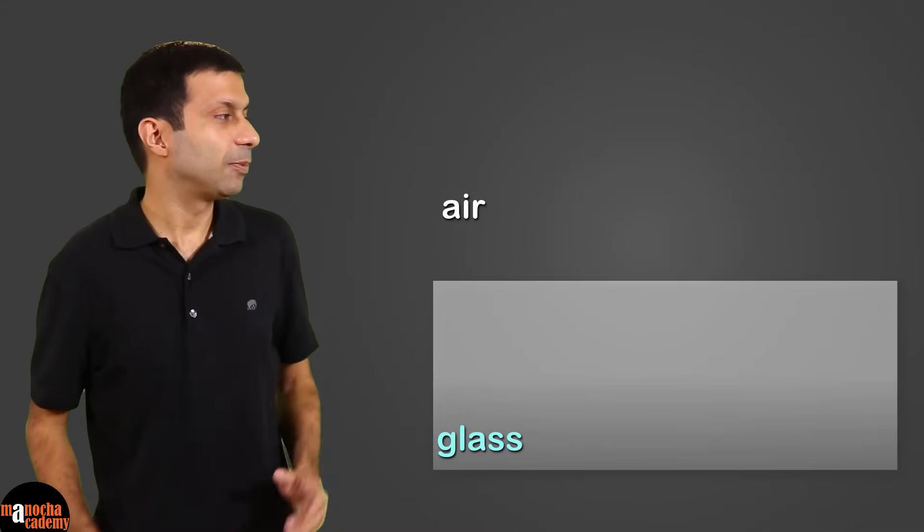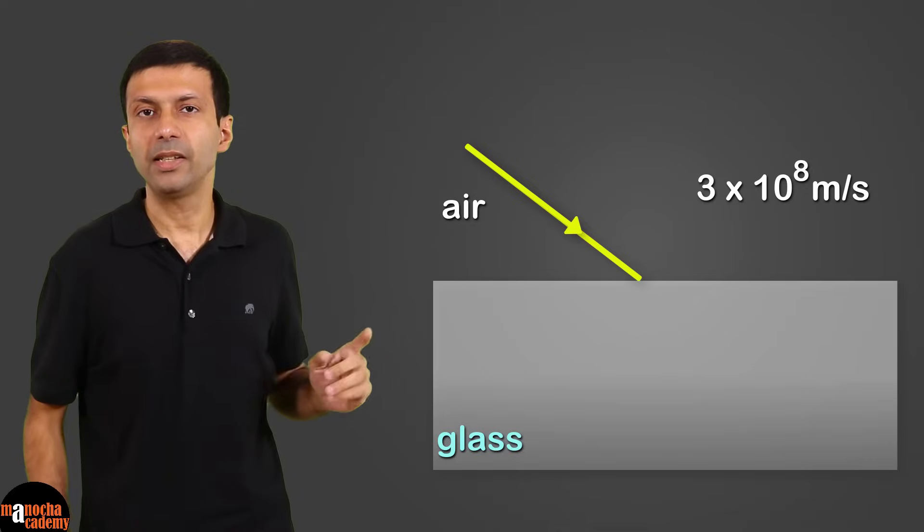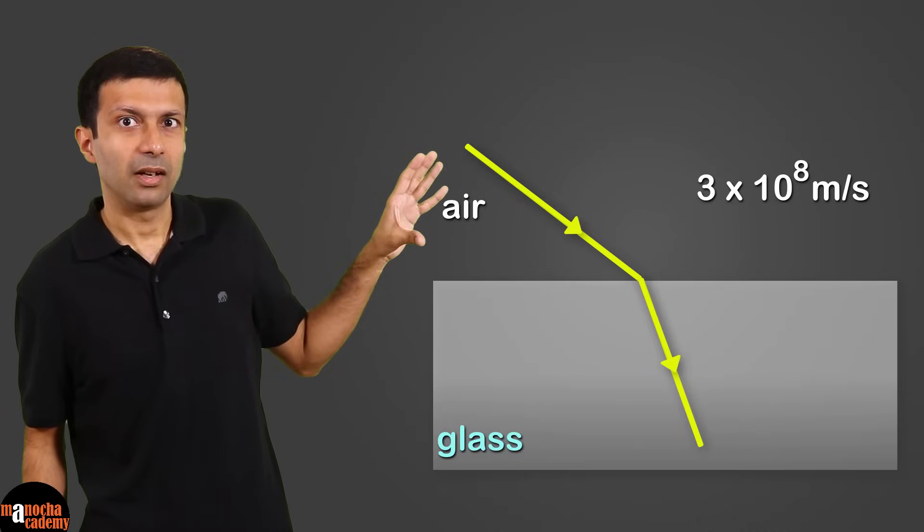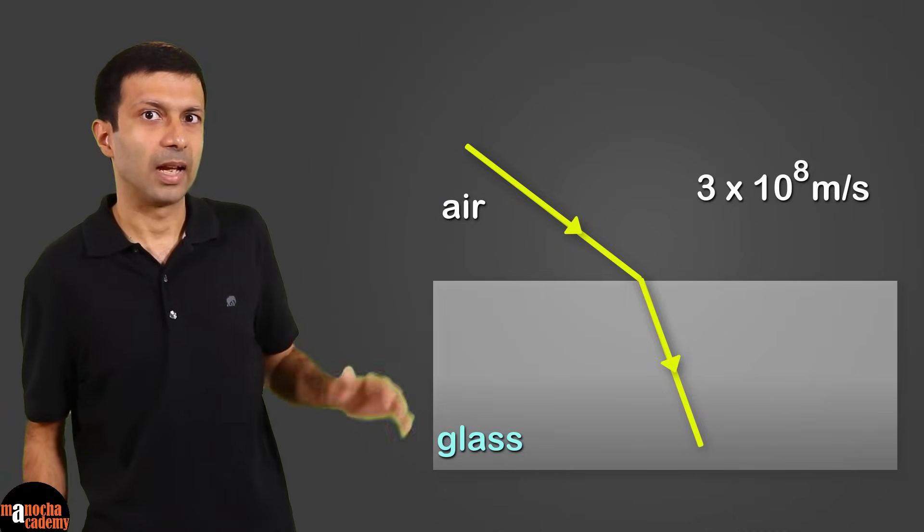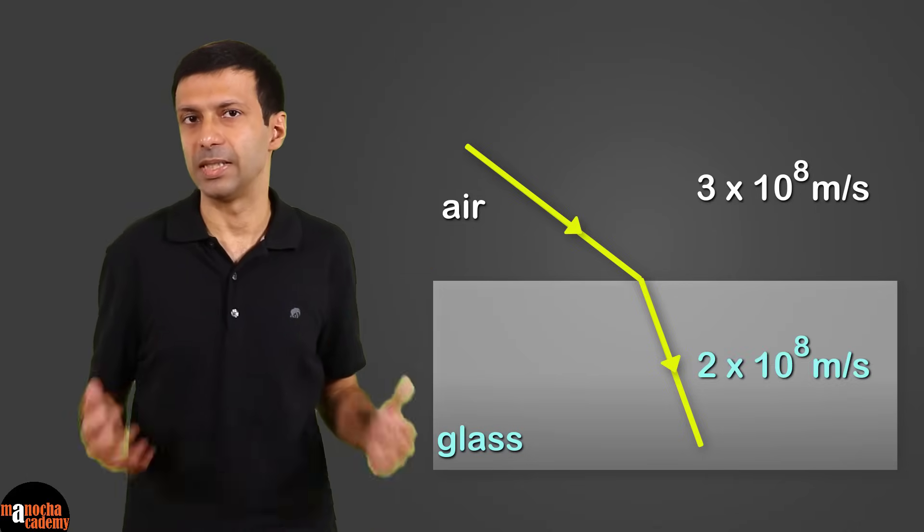So let's say the speed of light in air is approximately 3 into 10 to the power 8 meter per second. And since glass is denser than air, it slows down the light when it enters the glass block. And let's say the speed here is 2 into 10 to the power 8 meter per second.